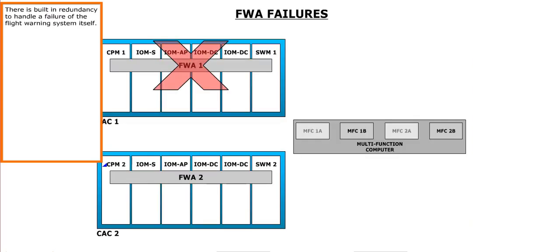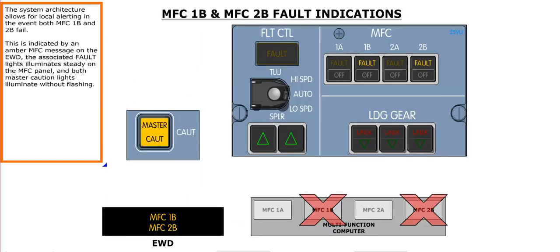There is built-in redundancy to handle a failure of the flight warning system itself. The system architecture allows for local alerting in the event both MFC 1B and 2B fail. This is indicated by an amber MFC message on the EWD. The associated fault lights illuminate steady on the MFC panel, and both master caution lights illuminate without flashing.